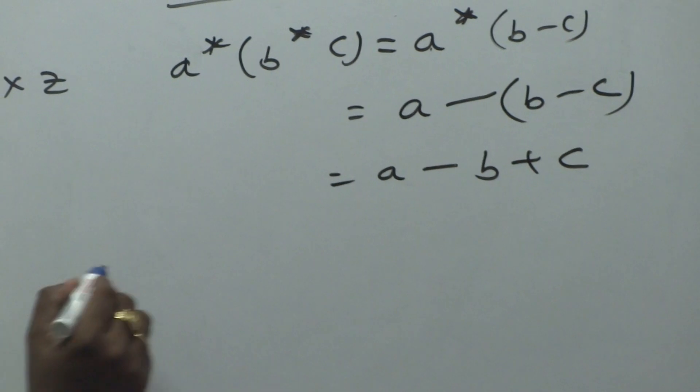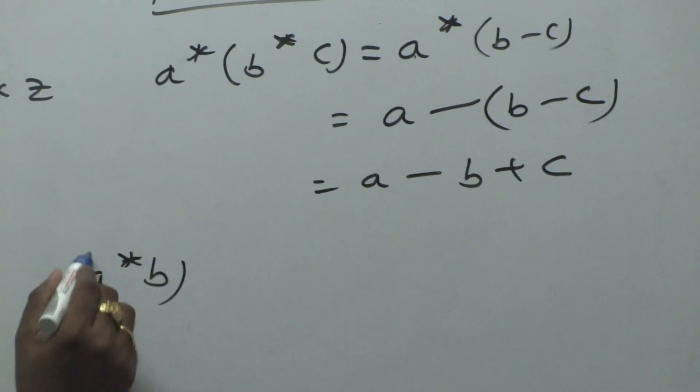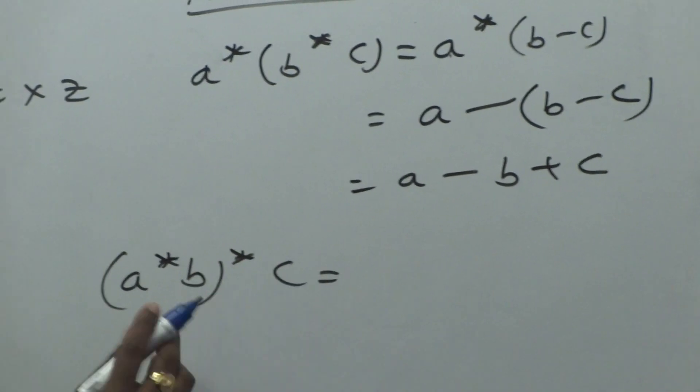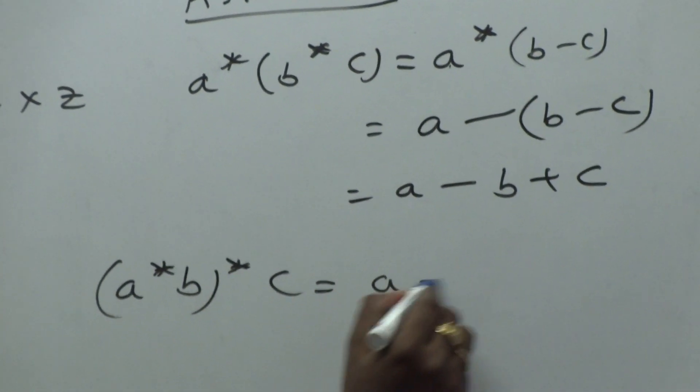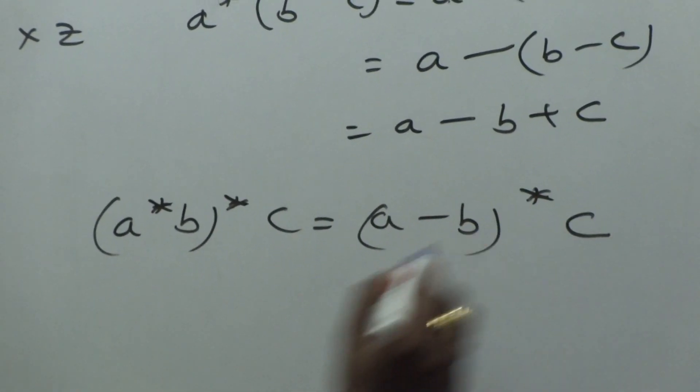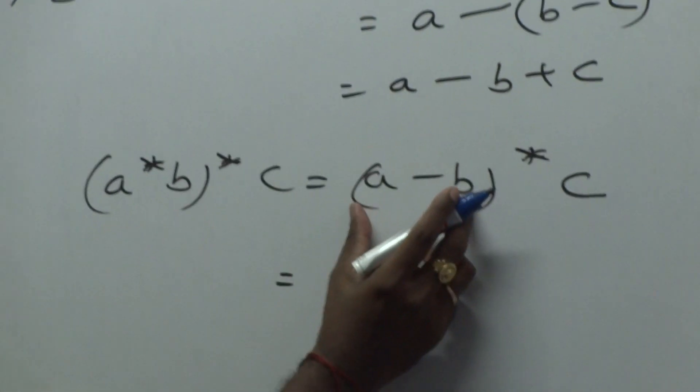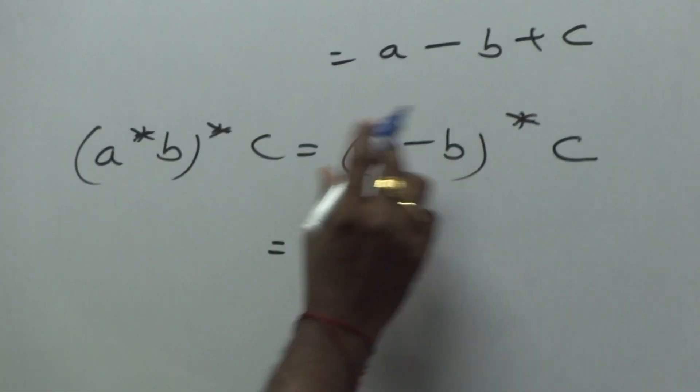Now consider RHS: A star B star C. What is A star B? A minus B star C. Now this fully is A, this is B. What is A star B?